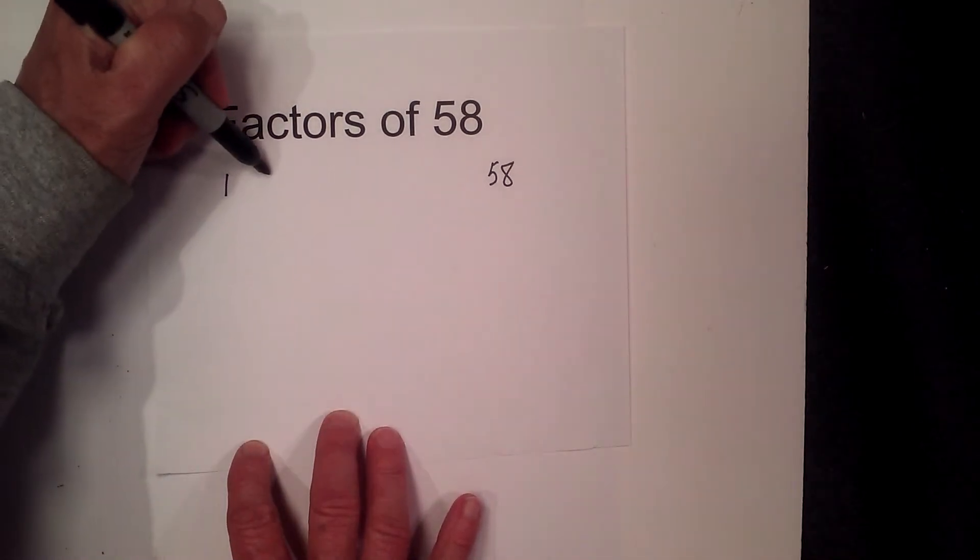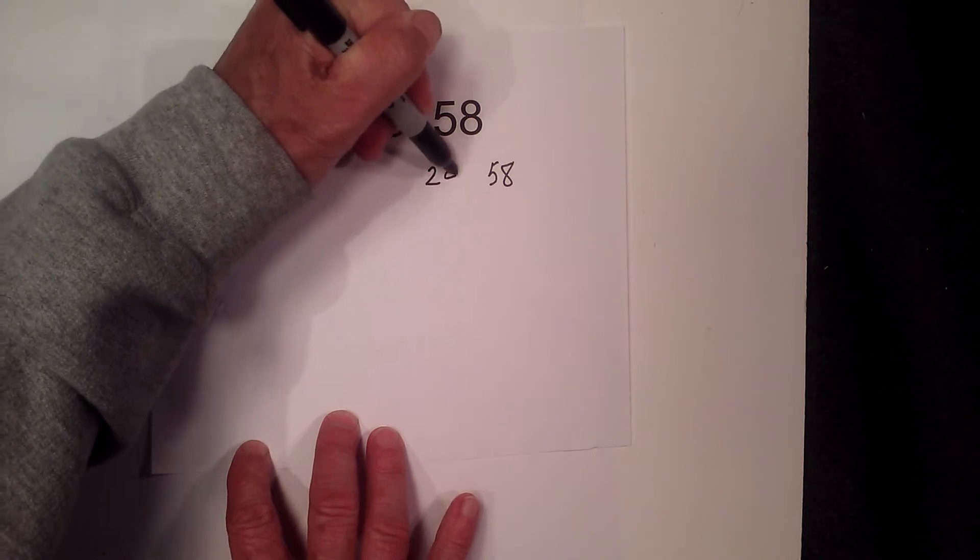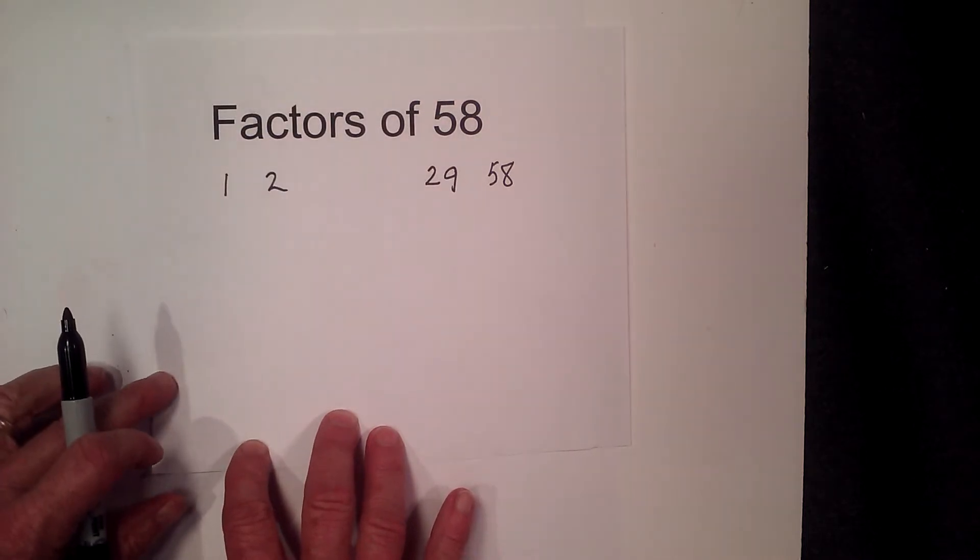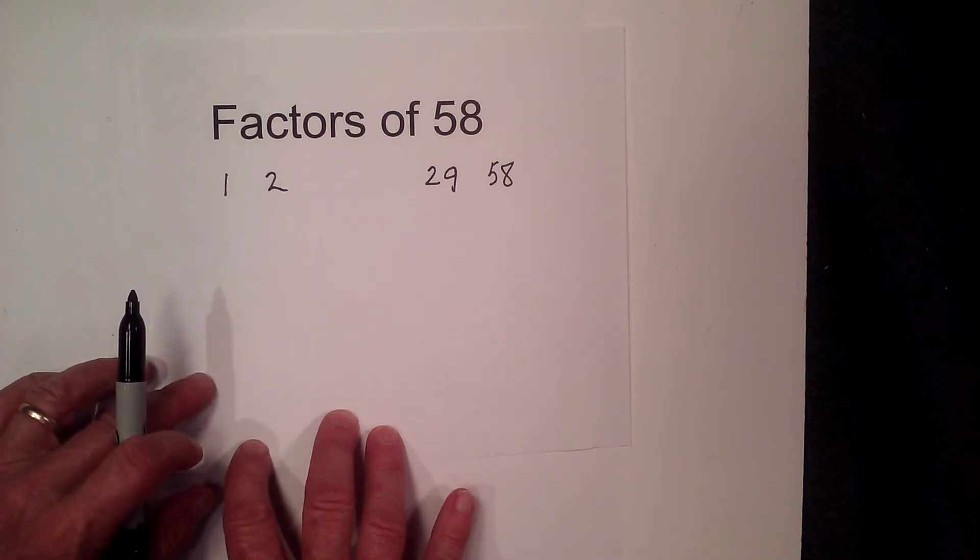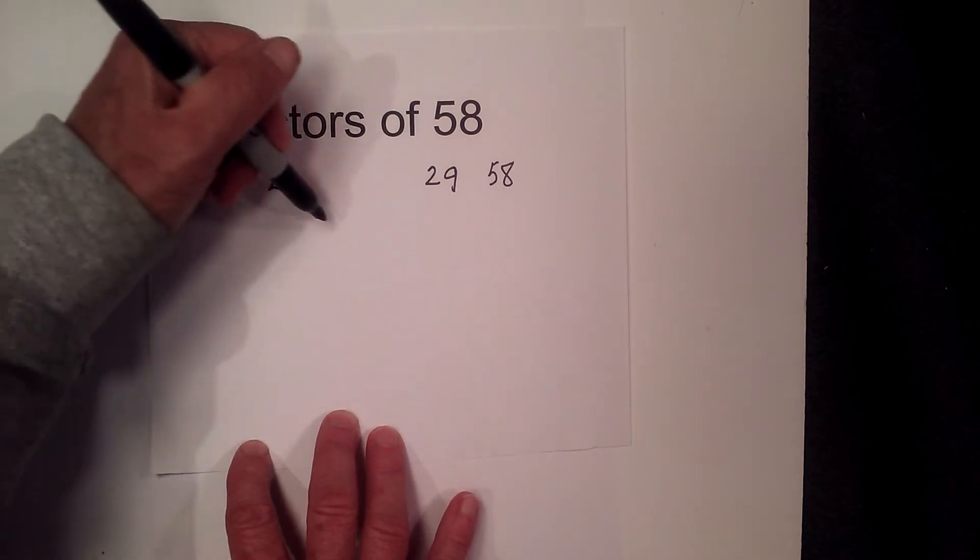2 goes into 58. 2 times 29 goes into 58. And then after that those are the only numbers that go into 58. 2, 3, 4, 5, 6, 7, 8, etc. do not go into 58.